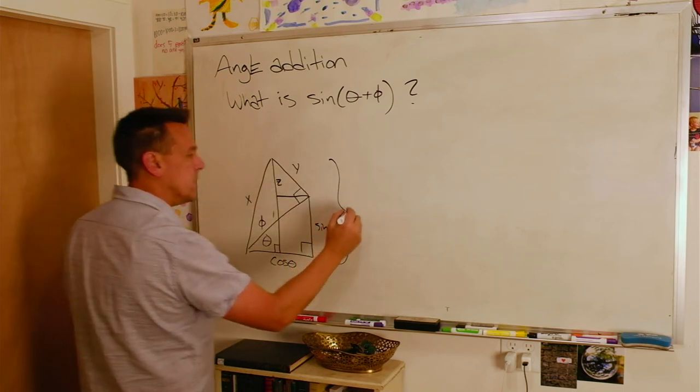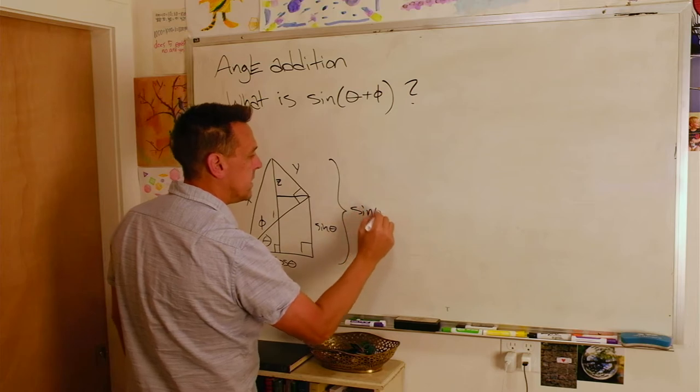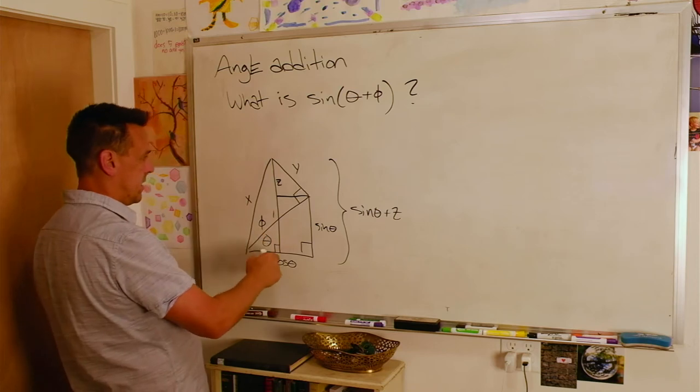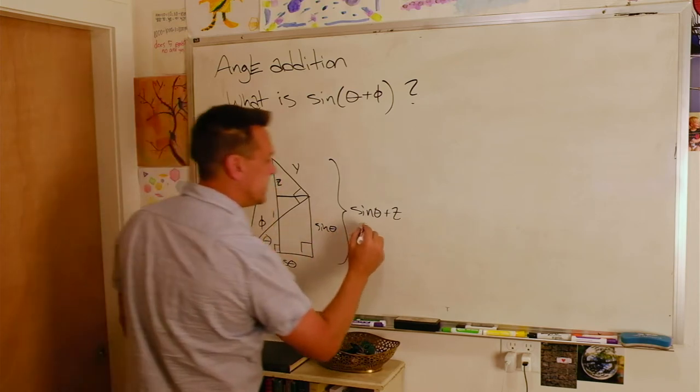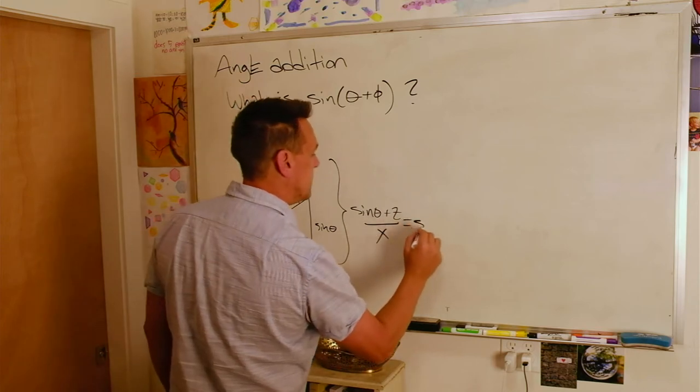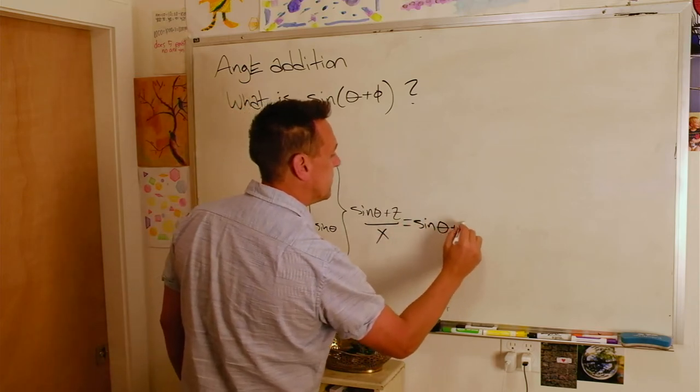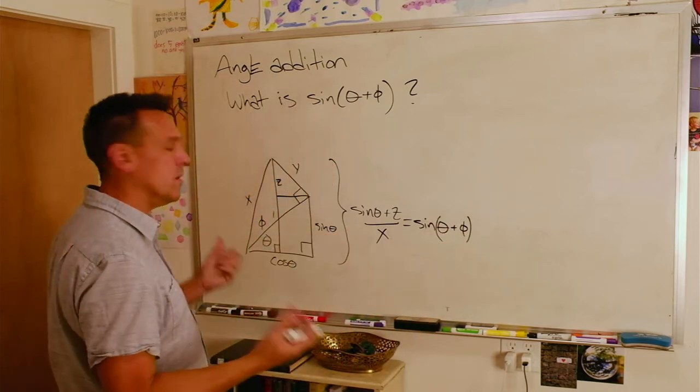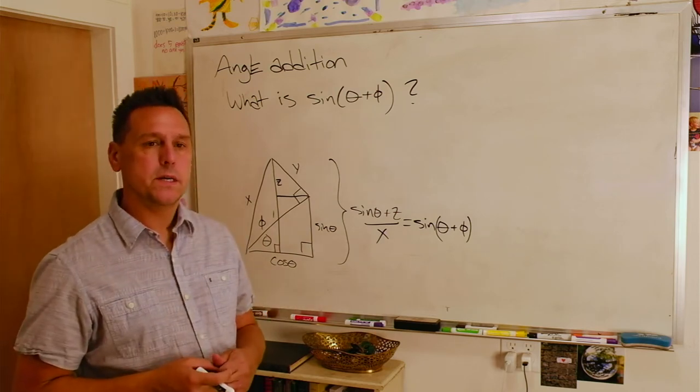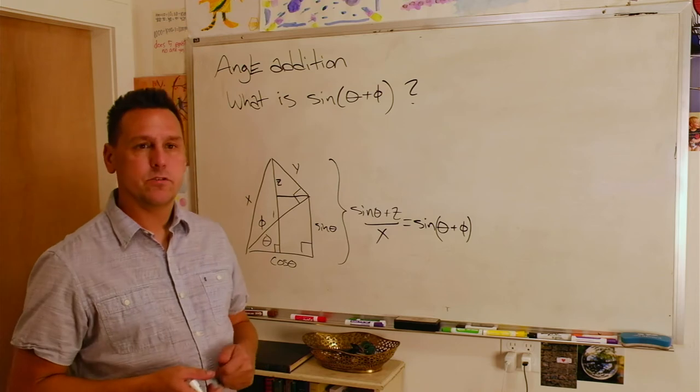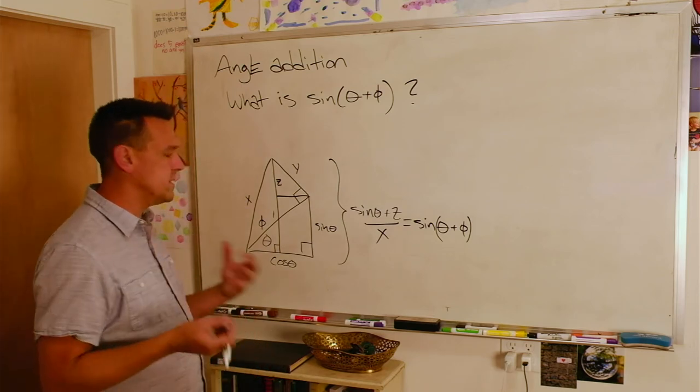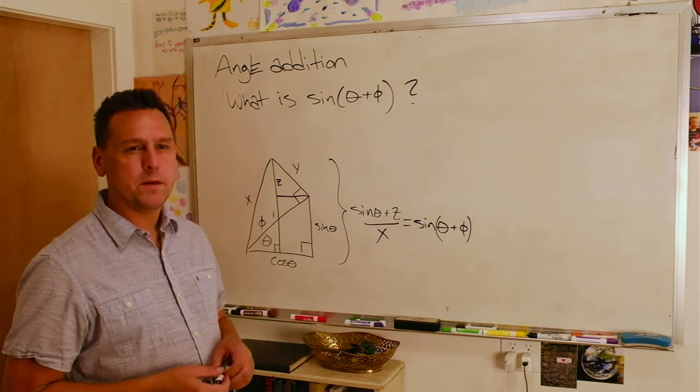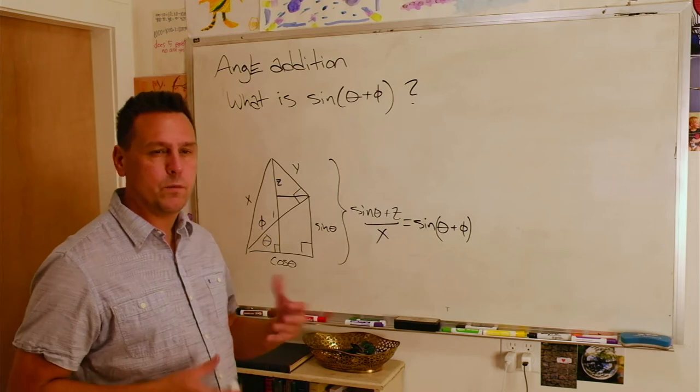I know that this vertical as a whole is sine theta plus z, and then that opposite side divided by the hypotenuse is going to be the sine of theta plus phi. So if I can figure out what z is and what x is, and along the way in order to be able to do that I'm going to figure out what y is, I'll have my angle addition formula. Now one of the things that's important to keep track of here is since we're dropped into the middle of this problem, it might be hard to remember what are the things that are known and what are the things that are unknown.